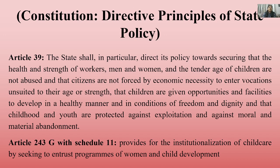Then comes DPSP — Directive Principles of State Policy. The most important is Article 39, which directs that the health and strength of workers, men and women, and the tender age of children are not abused; that citizens are not forced by economic necessity to enter vocations unsuited to their age or strength; that children are given opportunities and facilities to develop in a healthy manner and in conditions of freedom and dignity; and that childhood and youth are protected against exploitation and against moral and material abandonment.